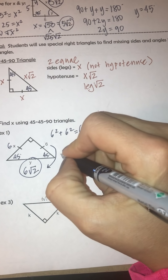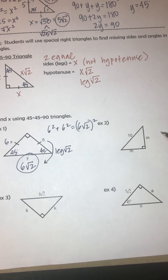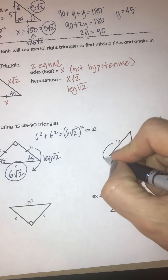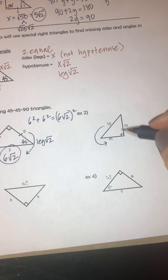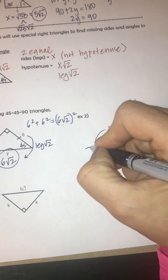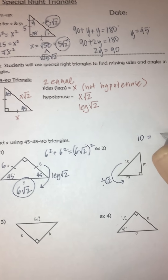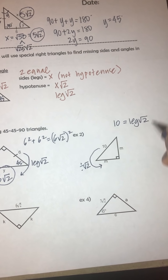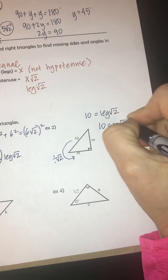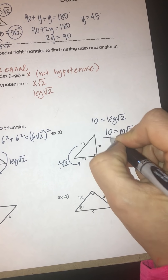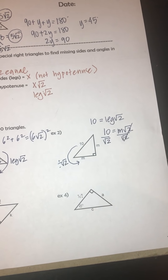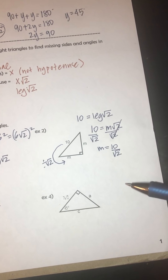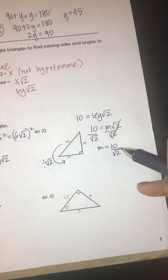Now it gets a little bit trickier when they give us the hypotenuse instead. To go from the leg to the hypotenuse, we multiply the leg by the square root of 2. So to go backwards, we have to take the hypotenuse and divide it by the square root of 2. This is a little bit trickier because we don't know this extra step about radicals. So divide by the square root of 2. So 10 equals the leg times the square root of 2, where the leg is m. So that's saying that m is 10 over the square root of 2. This would be great if we could leave it this way, but mathematicians decided we can't leave the square root of 2 in the denominator.